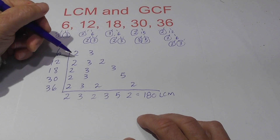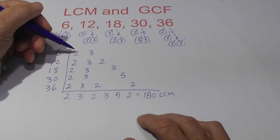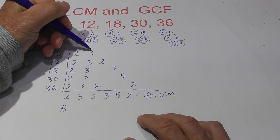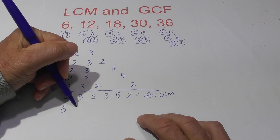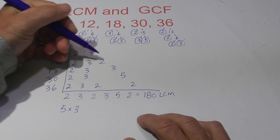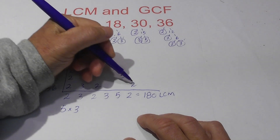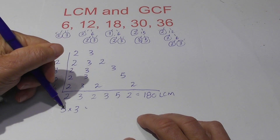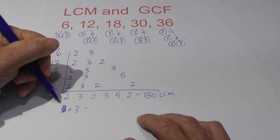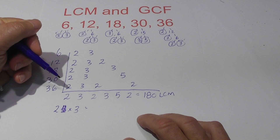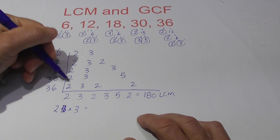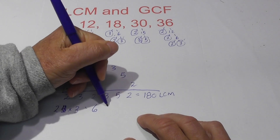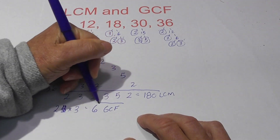Now for the GCF — since we have 5 numbers, you have to have 5 in the column. It looks like we have 5 in the first column and 5 in the second column. I should bring down the 2 and the 3. So the GCF equals 2 times 3, which is 6.